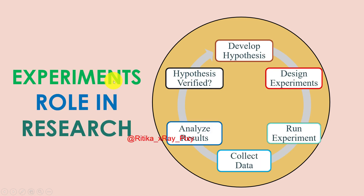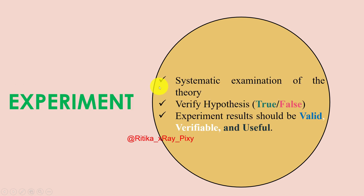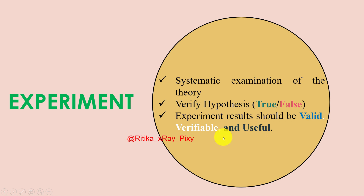The role of experiments in research: first, develop the hypothesis, then design experiments. After that, run the experiment and collect data. Then test hypothesis validation — whether it is true or not. Experiments are conducted to overcome existing limitations and to verify the hypothesis. Experiment results should be valid, verifiable, and useful. Verifiable means you get the same results every time you run the experiment.